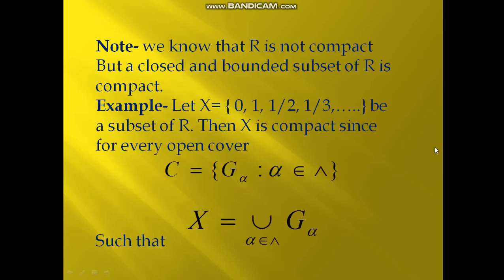Now another important property: we know that ℝ is not compact, meaning the usual metric space is not compact, but a closed and bounded subset of ℝ is compact. Let us see this by an example. Let X = {0, 1, 1/2, 1/3, ...} be a subset of ℝ. Then X is compact. Consider any open cover C = {G_α : α ∈ index set}.